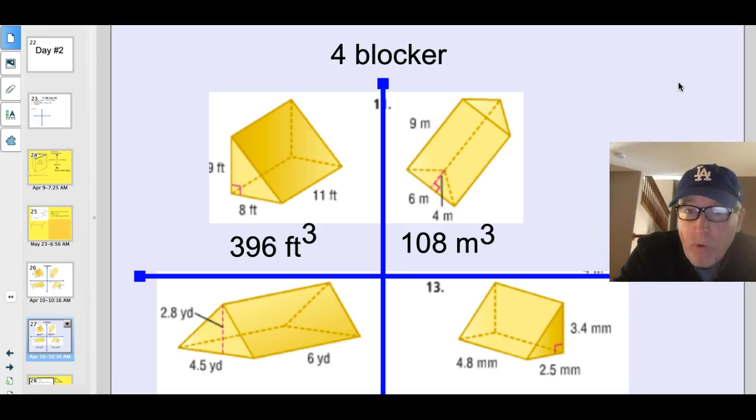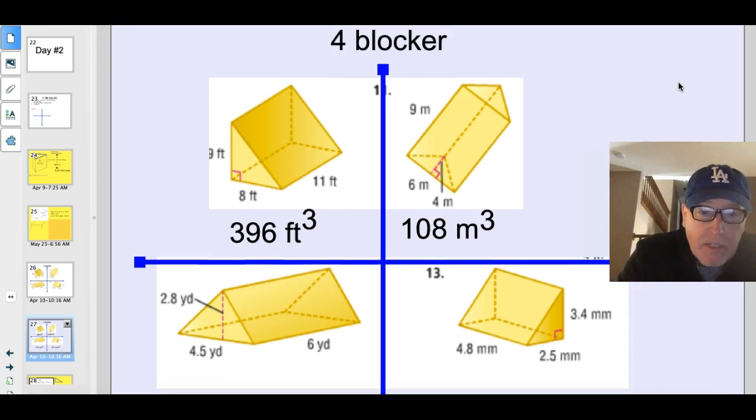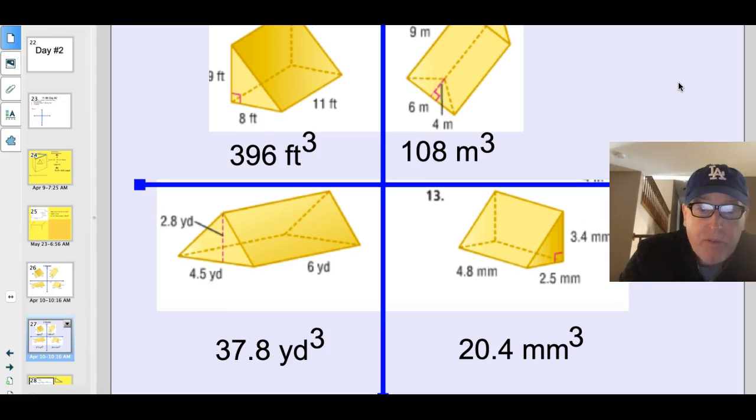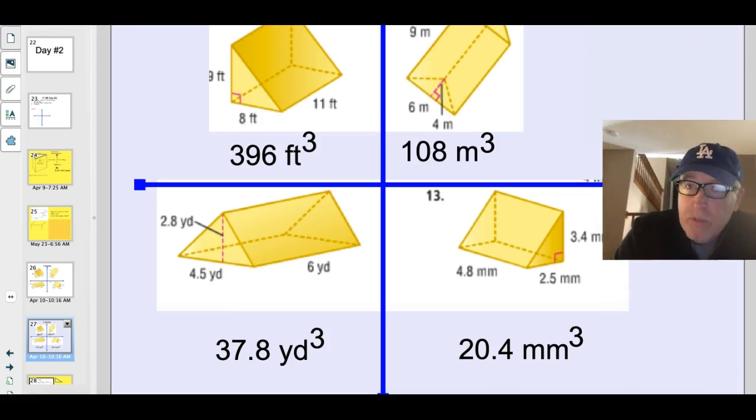Next one. 9 times 6 times 4. Divide by 2. You should get 108. The next one. 2.8 times 4.5. You divide that by 2 right now and get the area of the base and multiply it by the height. And what do you get here? 37.8 yards cubed. And this last one. I'll just put myself up in the corner here.